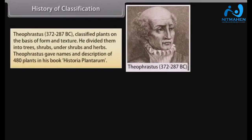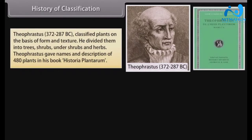Theophrastus (372–287 B.C.) classified plants on the basis of form and texture. He divided them into trees, shrubs, undershrubs, and herbs. Theophrastus gave names and descriptions of 480 plants in his book Historia Plantarum.